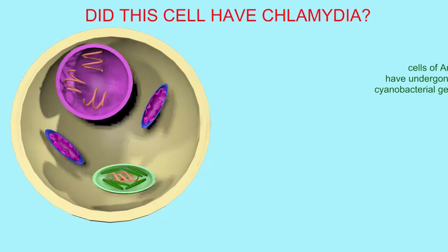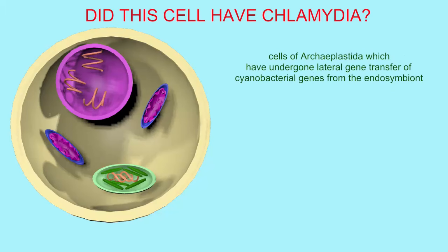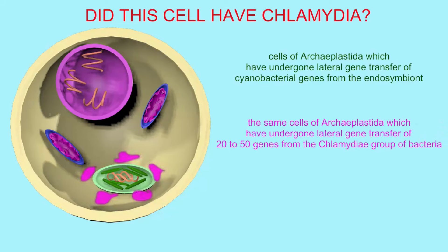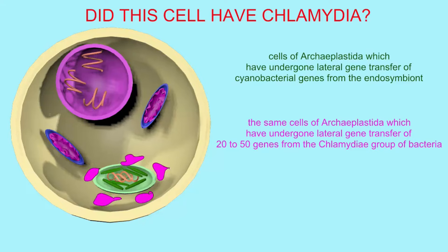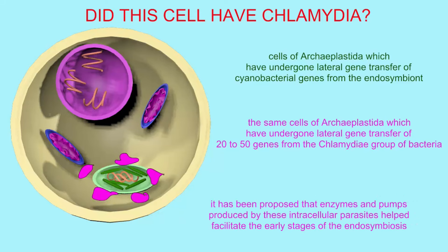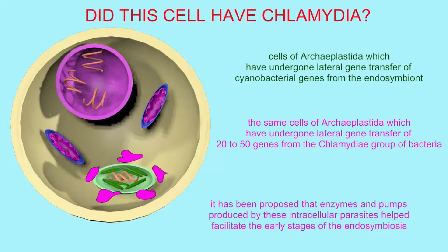The cells classified in Archaeplastida not only possess genes in the nucleus transferred from the cyanobacterial endosymbiont, but they also seem to have possessed another bacteria living inside the ancestral cell — of the chlamydia group. These are intracellular parasites, but some of the enzymes and pumps produced by chlamydia, whose genes are retained in this group, may have been important in facilitating the early stages of the endosymbiosis of the chloroplast ancestor.